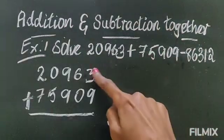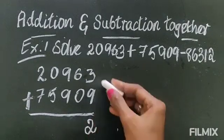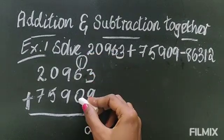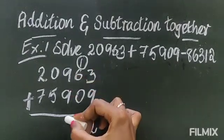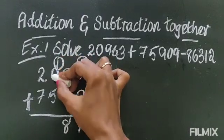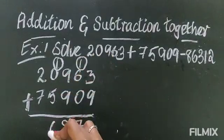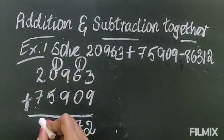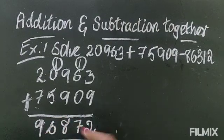Okay, first we will add these two numbers. 3 plus 9 you will get 12, so 2 you will write here, 1 carry over. 1 plus 6 is 7, 7 plus 0 is 7. Again 9 plus 9 is 18, so 8 you will write here and 1 you carry. 1 plus 0 is 1, 1 plus 5 is 6. Next we have 2 and 7, 2 plus 7 is 9. So we have the total now 96,872. This is the total.